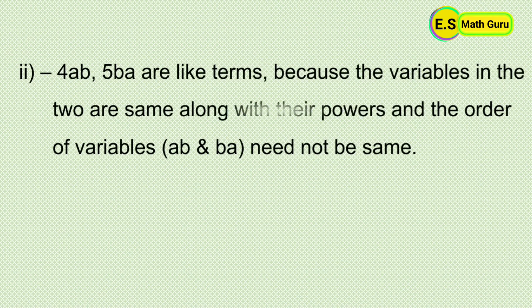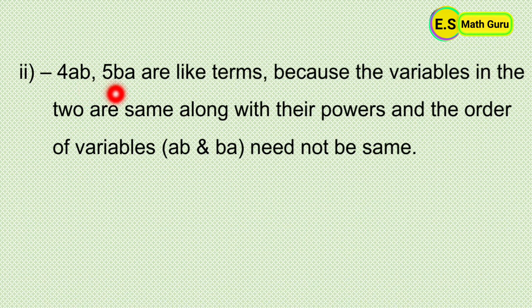Next, minus 4ab and 5ba are like terms because the variables in the two terms are the same along with their powers, and the order of the variables ab and ba need not be the same.